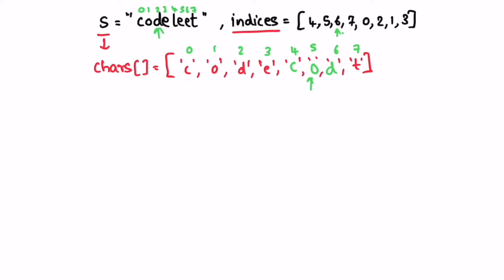Go to the next iteration — i is pointing at 7. The character is 'e', so we replace the seventh character with 'e'. Next iteration, i is pointing at 0. The next character inside s is 'l', so we replace the zeroth index with 'l'. Then i is pointing at 2, so we replace the second character with 'e'.